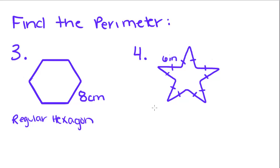We have two more examples. Find the perimeter, and they give us this little note right here, that this is a regular hexagon. If you remember, a regular polygon means that all the sides are congruent. So, a regular hexagon means that every one of these sides has a measure of 8 centimeters.